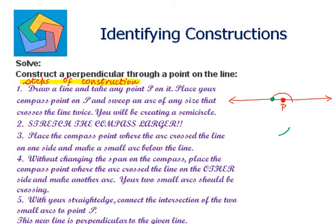Without changing the span of the compass, place the compass point where the arc crossed the line on the other side and make another arc. You need to take your compass point on the other intersecting point and make another arc which intersects the previous arc. These arcs can be made above or below the line. Your two small arcs should be crossing. With your straight edge, connect the intersection of the two small arcs to the point P.